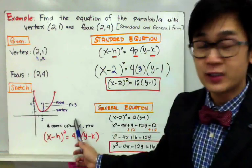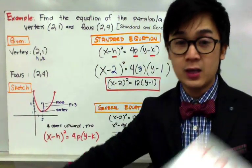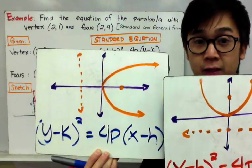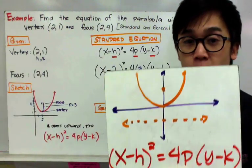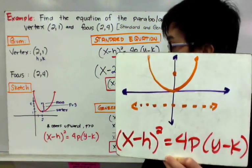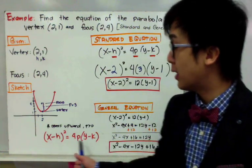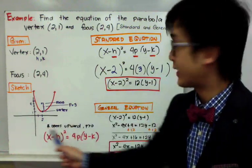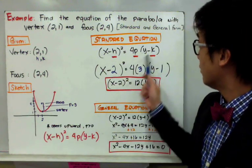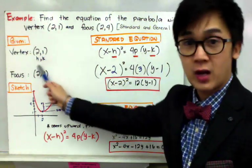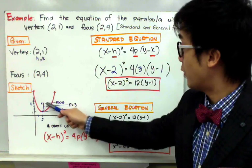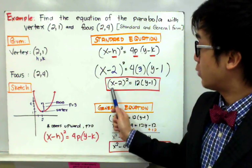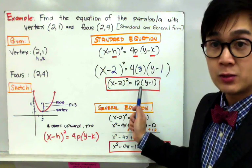After sketching the graph, it's direct substitution. Since the parabola is opening vertically, we use the formula: (x − h)² = 4p(y − k). We replace h, p, and k based on our sketch: h = 2, k = 1, and p = 3 (the distance from vertex to focus). Simplifying gives the standard equation: (x − 2)² = 12(y − 1).